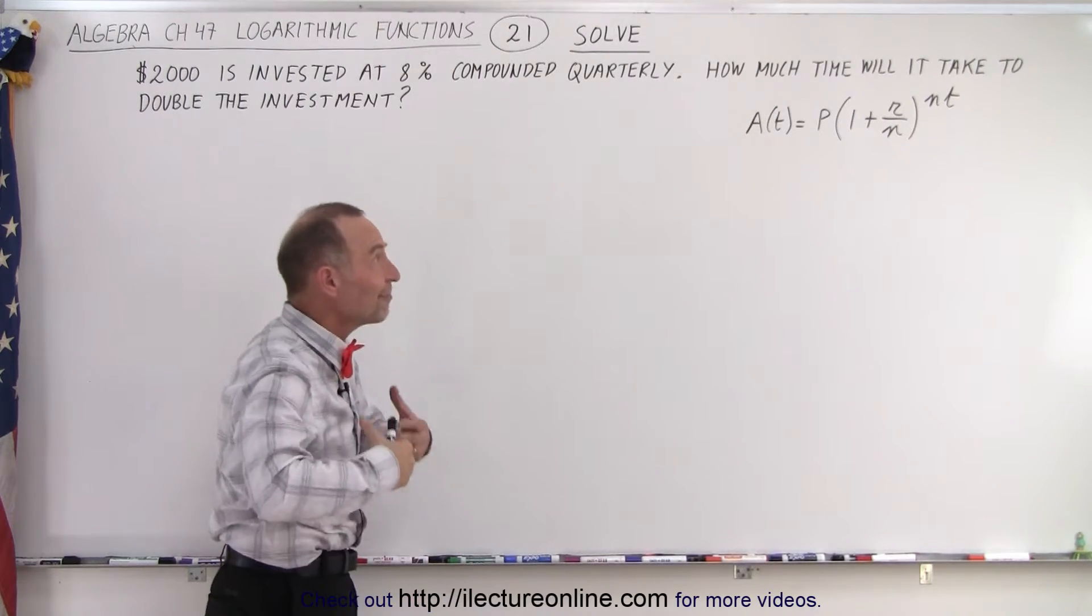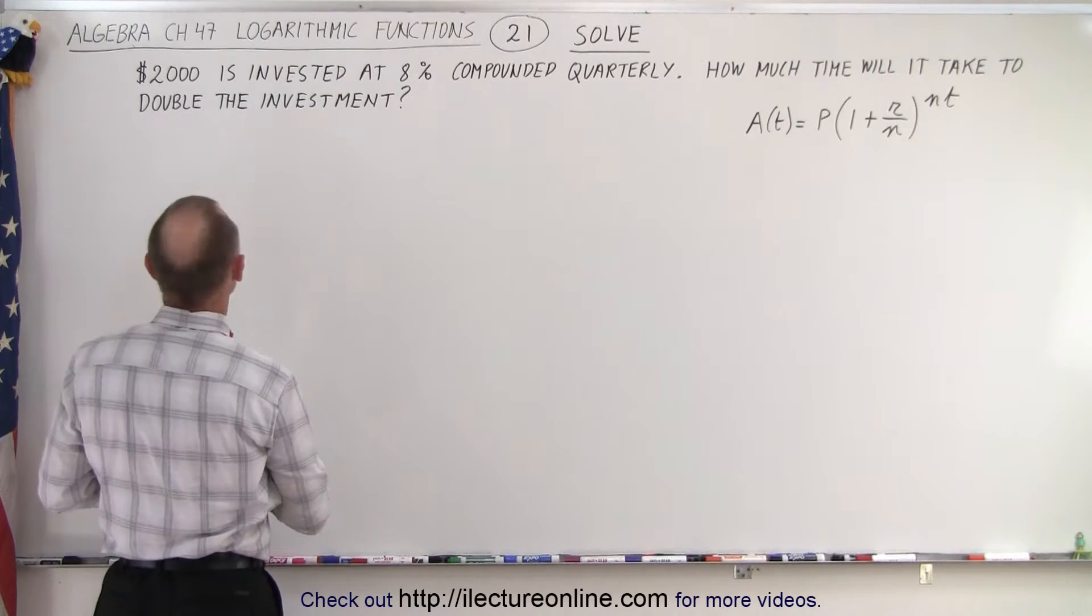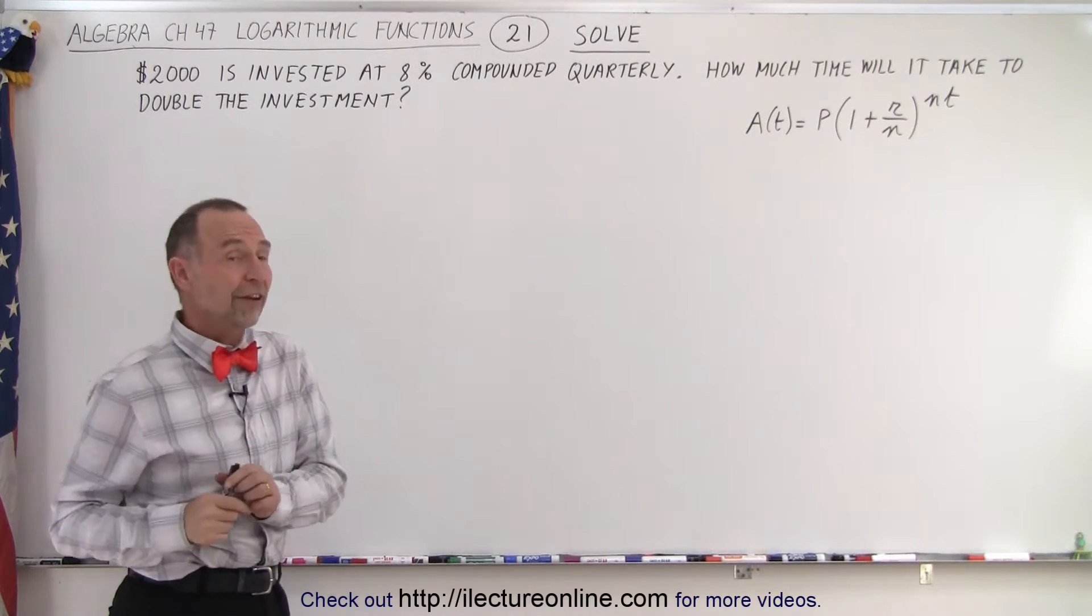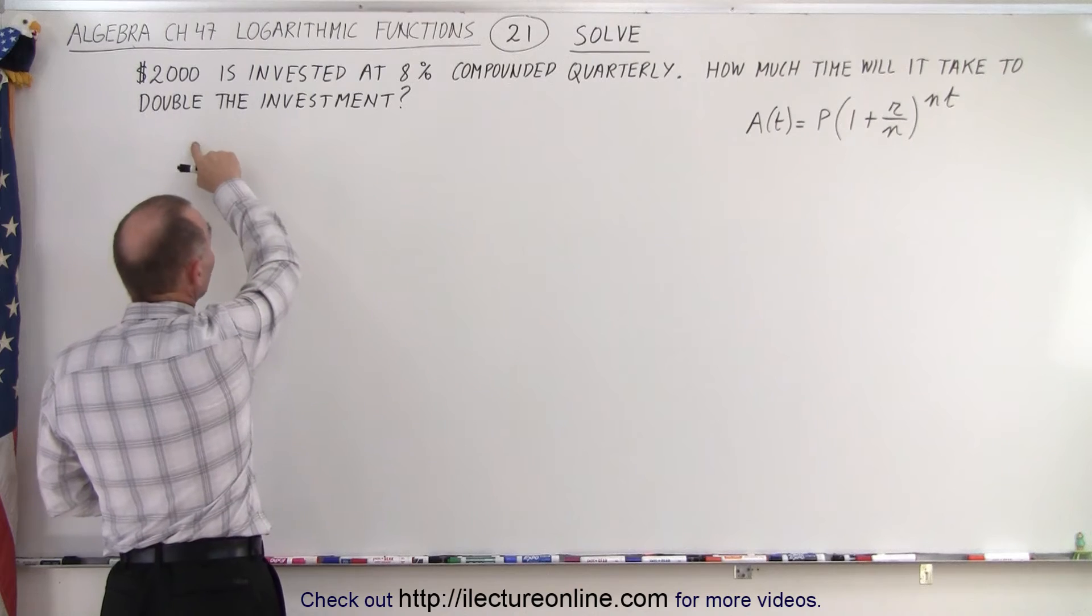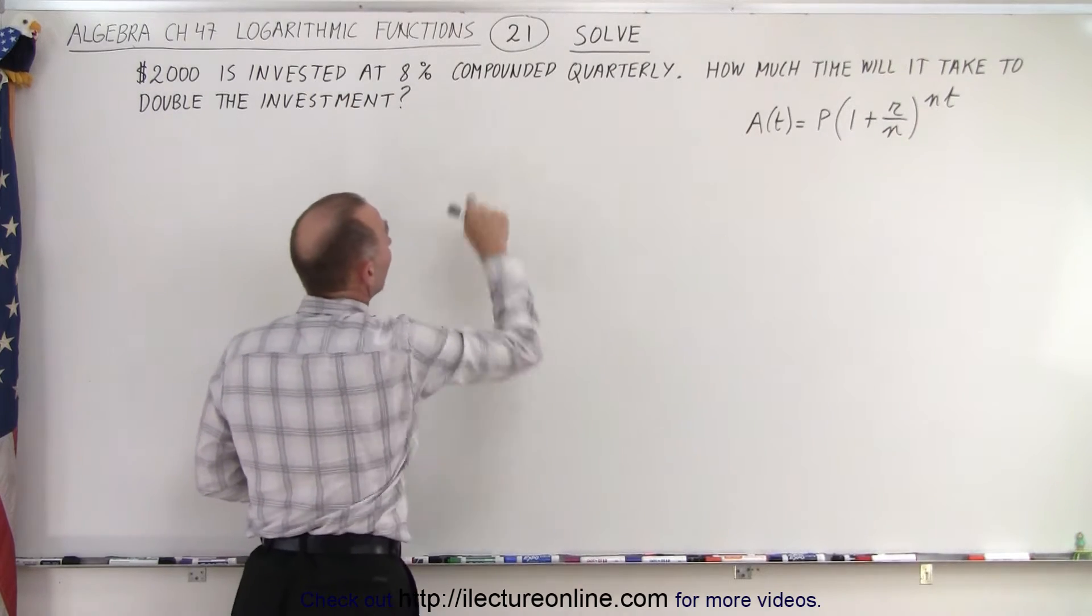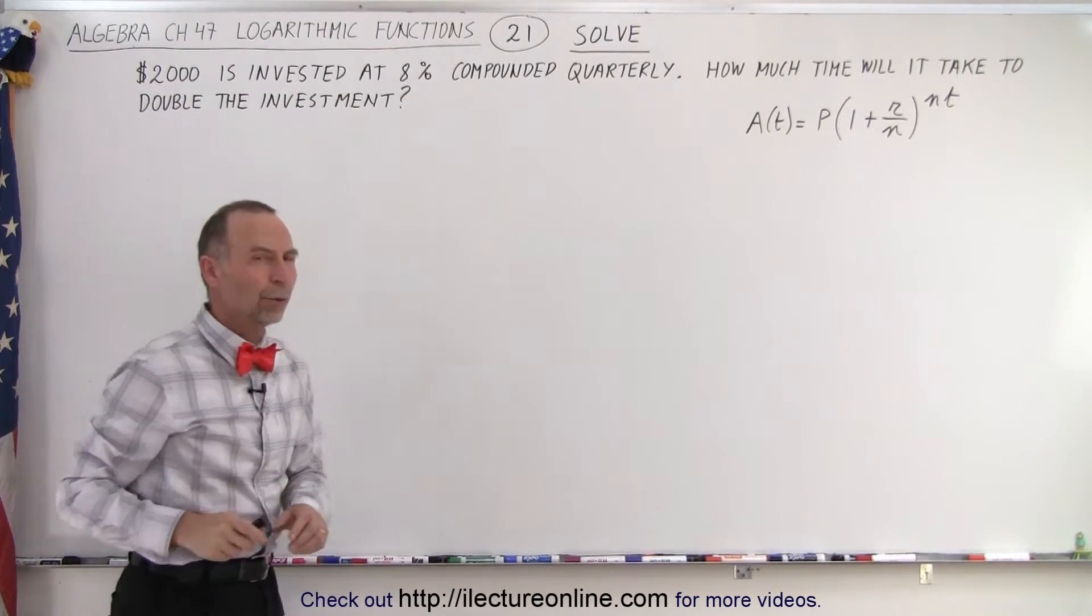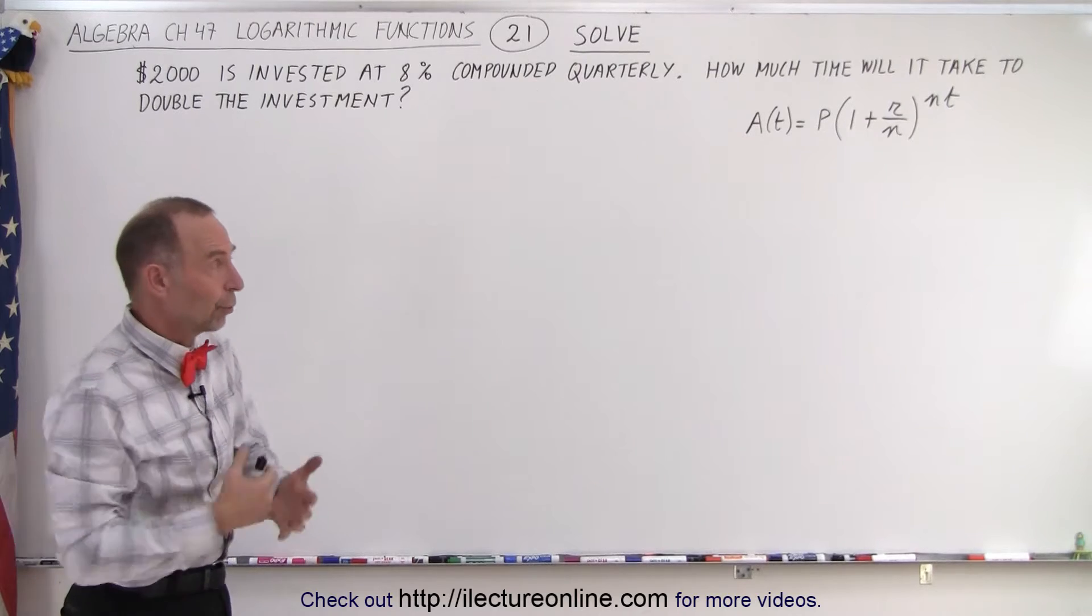What we're doing here is we're investing some money, and what they're asking us is how long will it take to double our investment. So we're investing $2,000 at 8% compounded quarterly, and how long will it be before we have twice as much, $4,000.